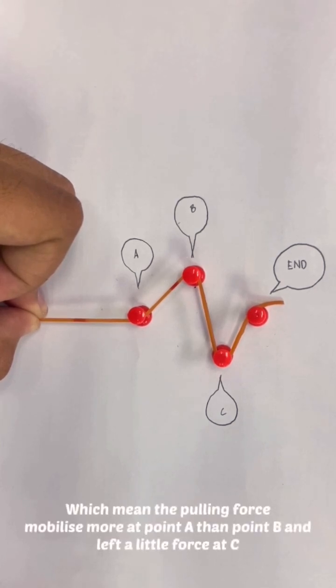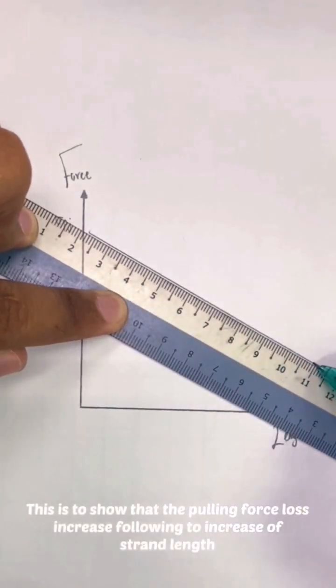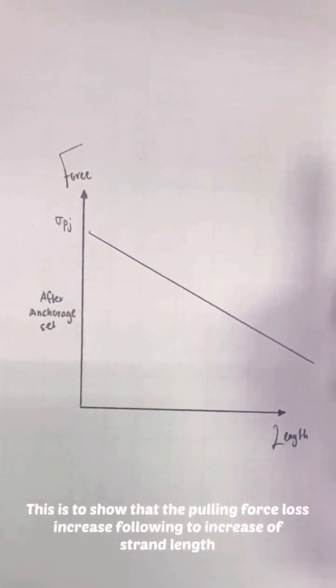Which means the pulling force mobilizes more at point A than point B and leaves a little force at C. This shows that the pulling force loss increases following the increase of strand length.